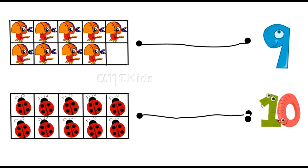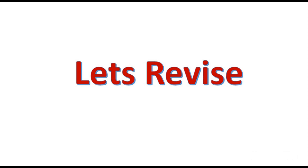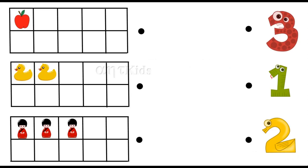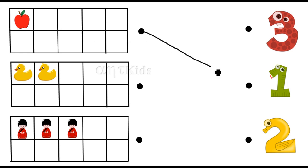How many ladybugs here? One, two, three, four, five, six, seven, eight, nine, ten — ten ladybugs are here in this tens frame. Let's revise. In this tens frame, how many apples? Only one. How many ducks here? Two.